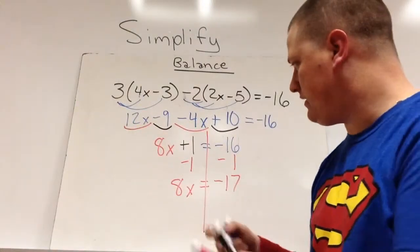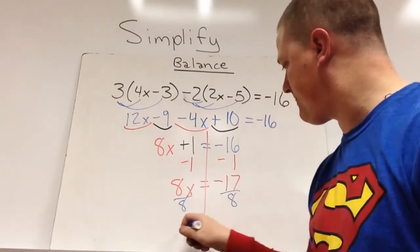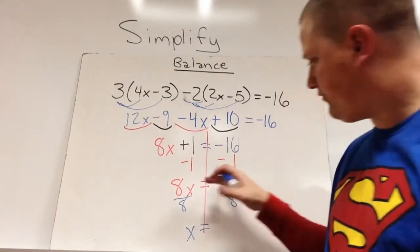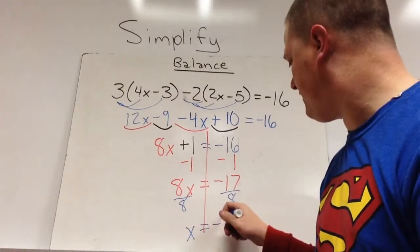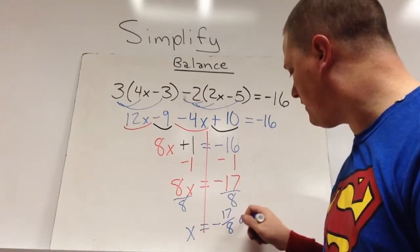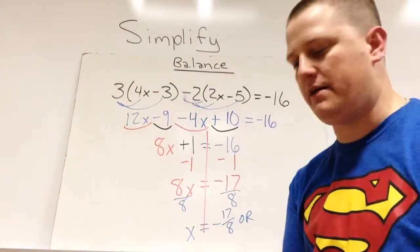And the last thing we do here is divide by 8. So this one doesn't divide perfectly, so I can either write it as the fraction negative 17 over 8, or I can use a calculator and turn this into a decimal.